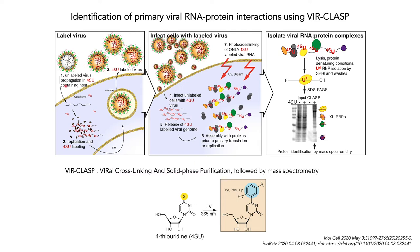We propagate an RNA virus of interest in a producer cell line in the presence of 4-thiouridine, rendering the resulting viral genomes photoreactive. We then isolate the 4-thiouridine labeled viruses and infect a new field of unlabeled cells under different conditions or times of infection. We then use 365 nm UV light to rapidly cross-link the incoming 4-thiouridine labeled viral genomes to interacting host and viral proteins.